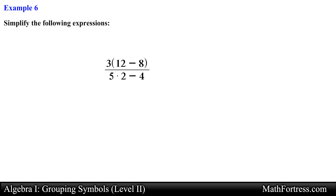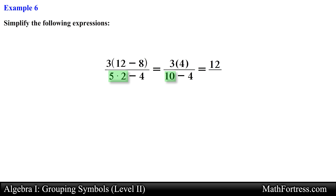Alright, let's try the next one. Once again we have a fraction bar, so we take care of the numerator and denominator first. Within the numerator we subtract 12 and 8 which reduces to 4, then multiply by 3 which reduces to 12. In the denominator we take care of 5 times 2 which equals 10, then subtract 4 which reduces to 6. Lastly, 12 divided by 6 equals 2.